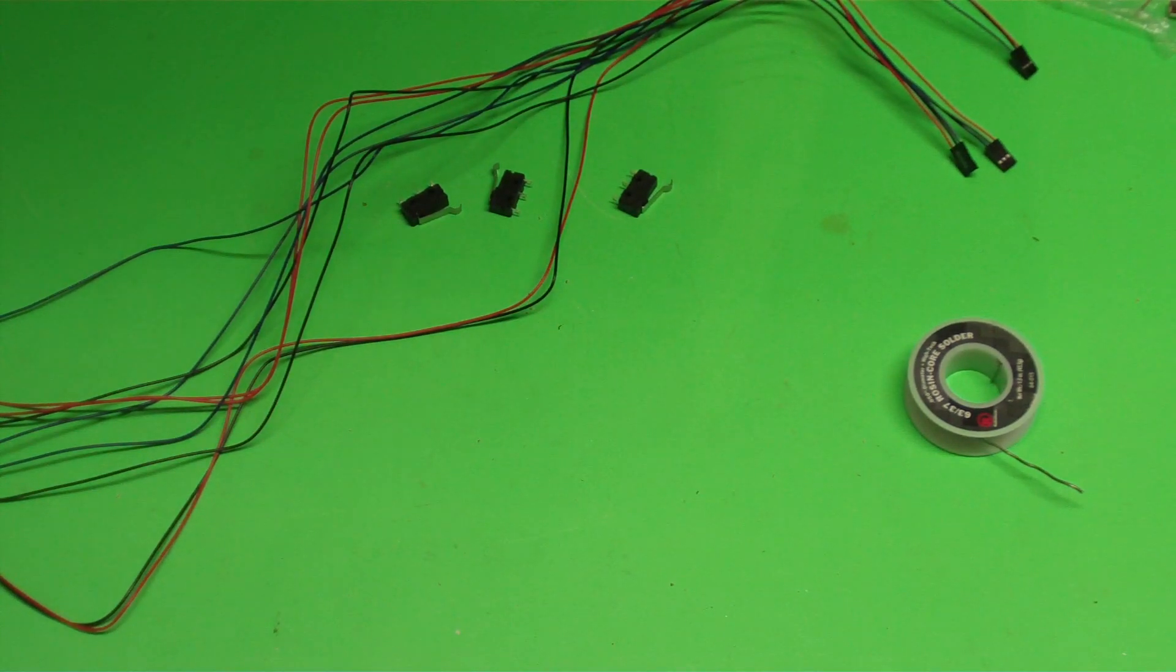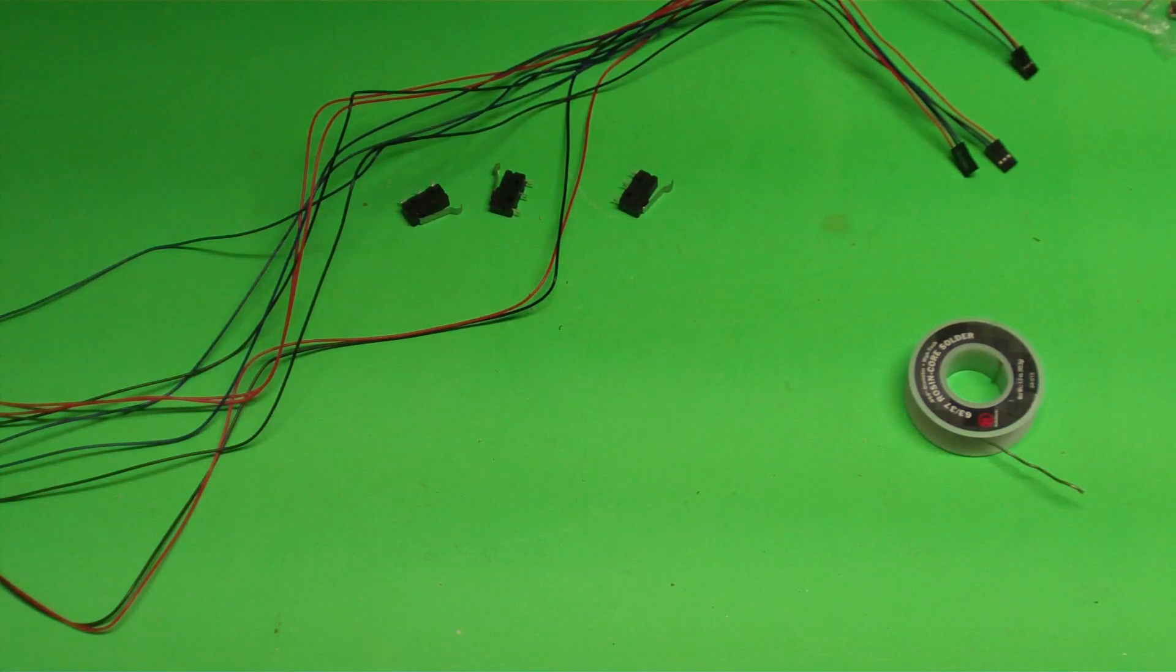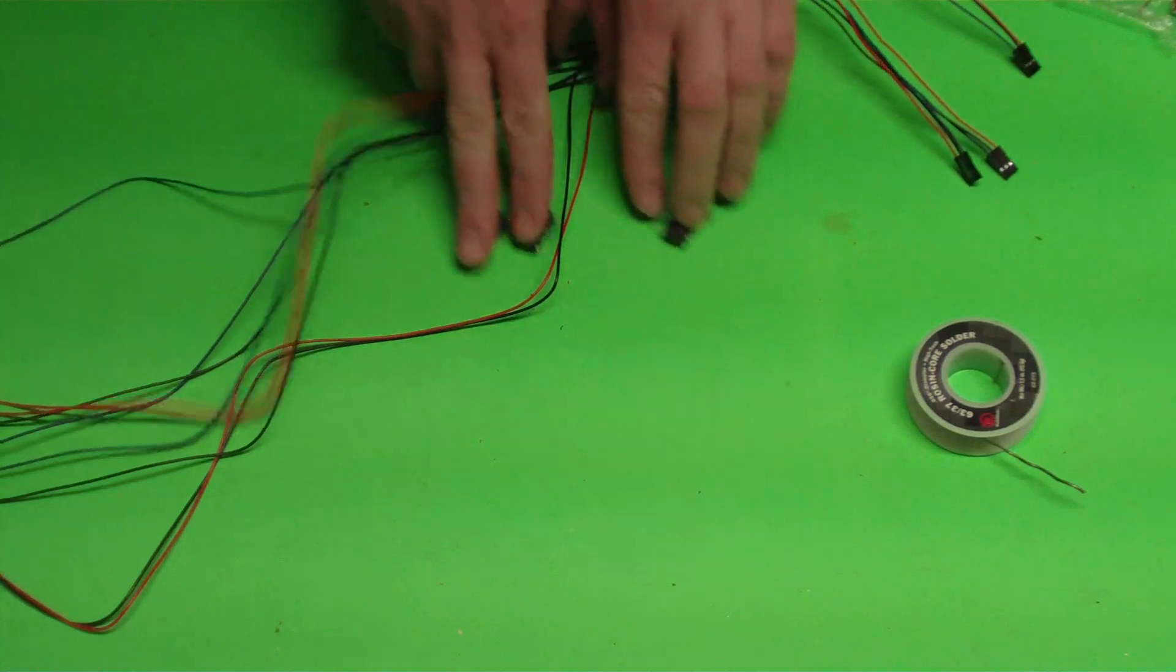You're going to want to find the end stop page in the build guide. Gather everything that you need for that which is going to include a soldering iron as well as your switches and some wires.